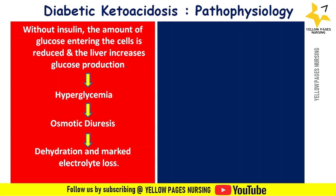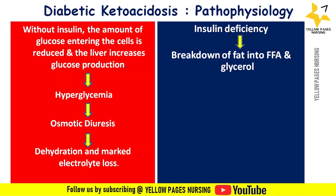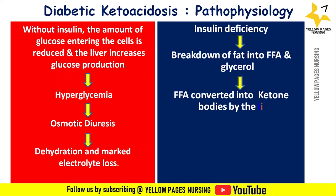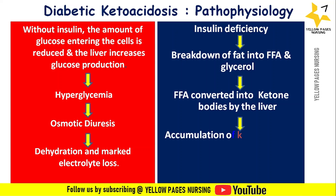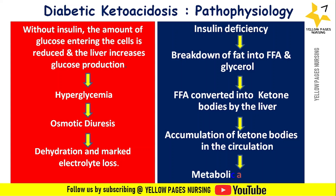The other effect of insulin deficiency is breakdown of fat into free fatty acids and glycerol. These free fatty acids are then converted to ketone bodies by the liver, leading to accumulation of ketone bodies in the circulation, which finally leads to metabolic acidosis.